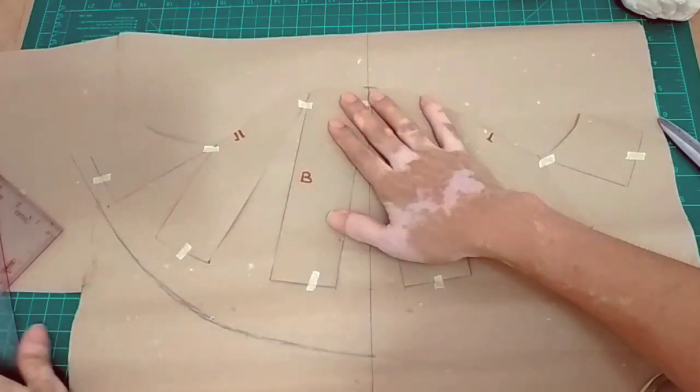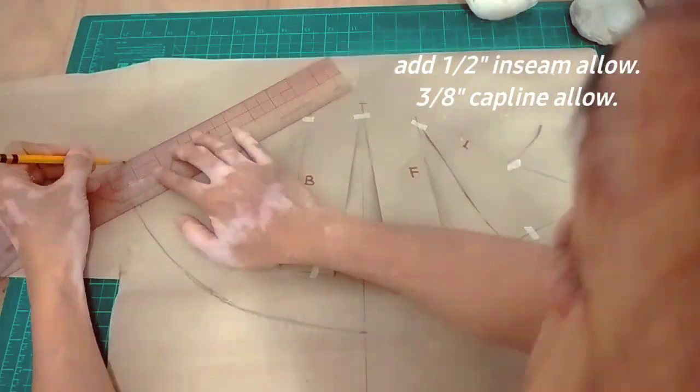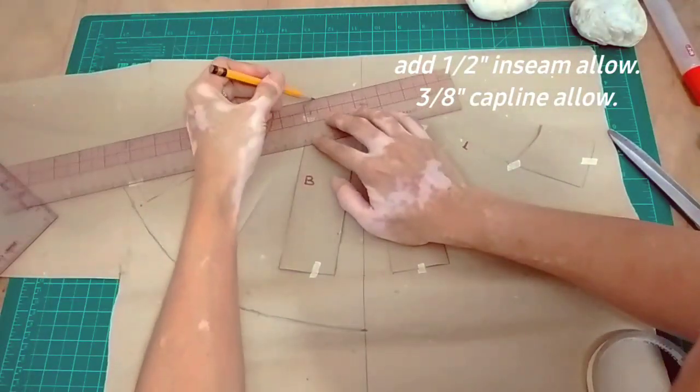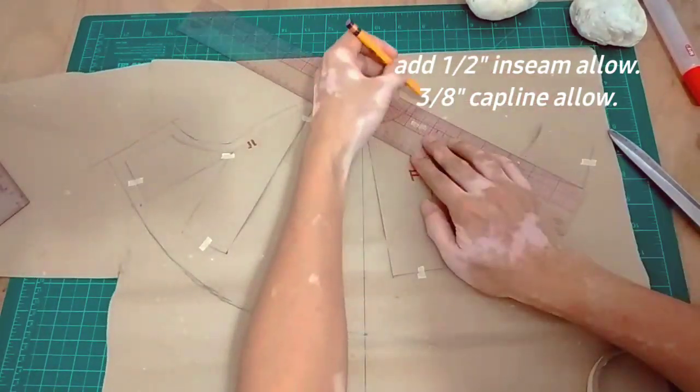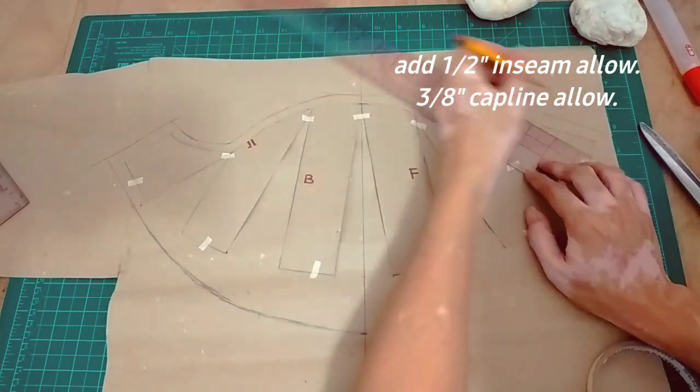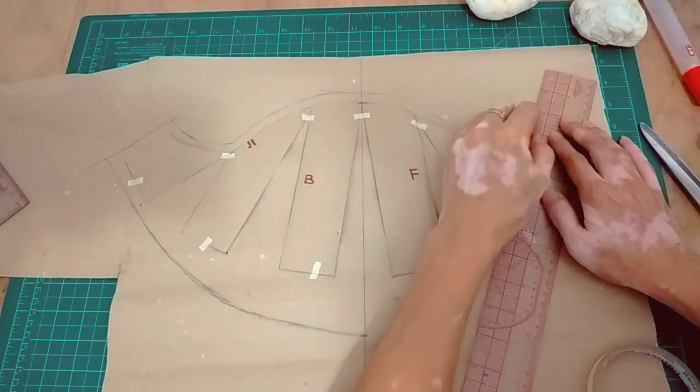Then you can use a french curve and complete the sewing allowances sa cap line and the in seam. We have 1.5 for the in seam and then 3/8 for the cap line.